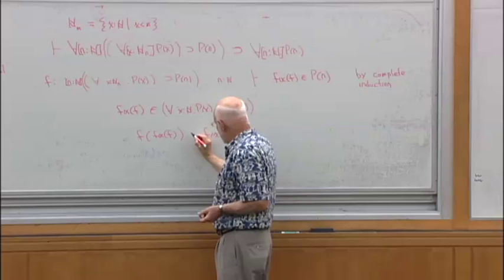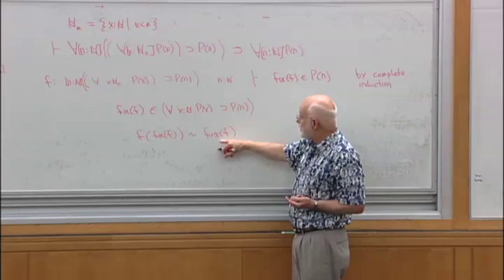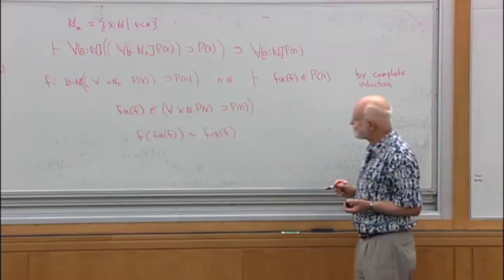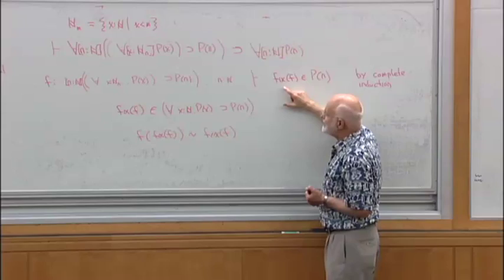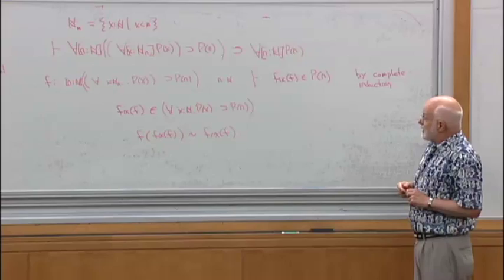Let me distinguish between this kind of equality and a really strong one: computational equality. I'll write that squiggle to mean these guys are interconvertible. When you do fix of f, you're actually computing this way. That was the rule from last time: if you take fix of f and apply it, you're going to substitute fix of f for the argument. That is all we have to know. Given that we have f in this type, that conversion is enough to finish the proof.